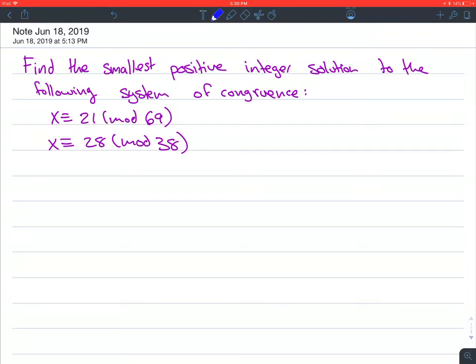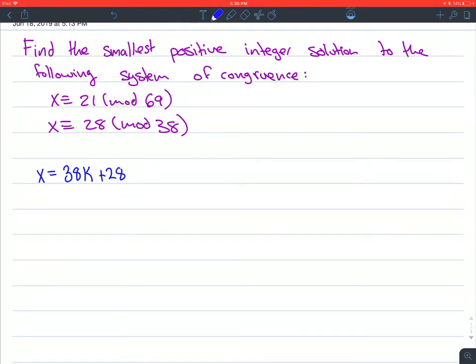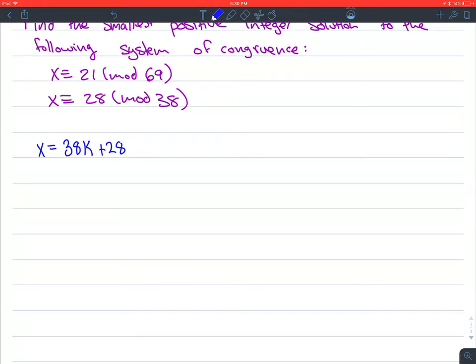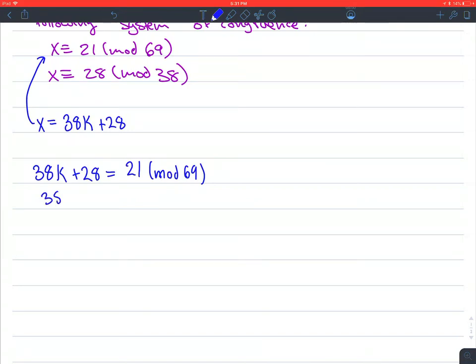So the first step we're going to do is we're going to let x equal 38k plus 28. And I'll show you why we're picking the second equation instead of the first one in a second. So now we're going to substitute this x for this x up here, so we're going to set them equal to each other. So we get 38k plus 28 equals 21 mod 69. So now we need to get k by itself, so we get 38k is equal to negative 7 mod 69.